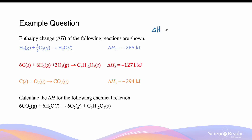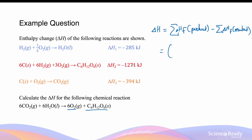We can start with the enthalpy value: this equals the sum of enthalpy of formation of the products minus the sum of the enthalpy of formation of the reactants. Starting with the products, we have oxygen and glucose. The enthalpy of formation of glucose is −1271 kJ, and the enthalpy of formation of oxygen is zero, as oxygen gas is the standard state of the element. We then subtract the sum of enthalpy of formation values of the reactants.